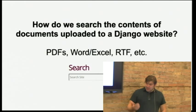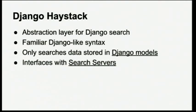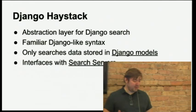The common tool for searching in Django is called Haystack. For those who haven't heard of it, it's a Django module that is an abstraction layer for doing search-related things. It's nice because it has syntax familiar to Django developers — it's easy to do queries in a Django-like way. Its limitation is that it's designed specifically to search content in Django models, or content that's in your database.